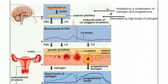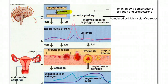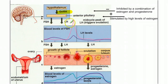Let's take a closer look at the menstrual cycle. The menstrual cycle is ultimately controlled by the brain — the hypothalamus. In the hypothalamus, the hormone gonadotropin-releasing hormone, or GnRH, is released. GnRH stimulates the anterior pituitary to release two hormones: FSH and LH, follicle-stimulating hormone and luteinizing hormone.